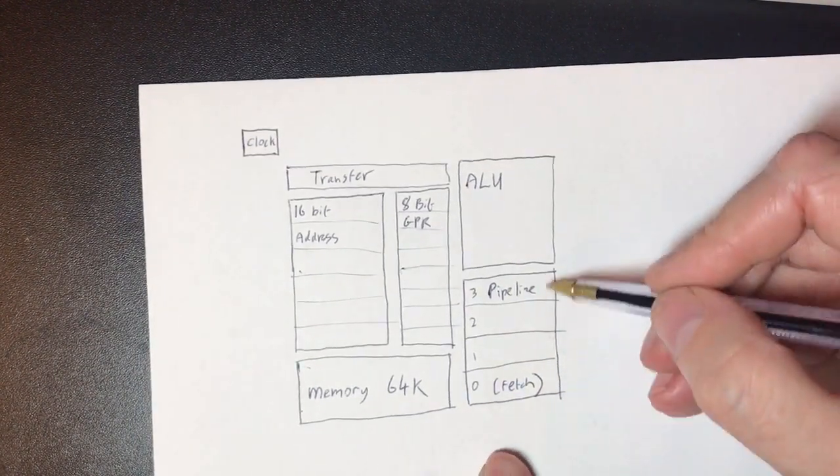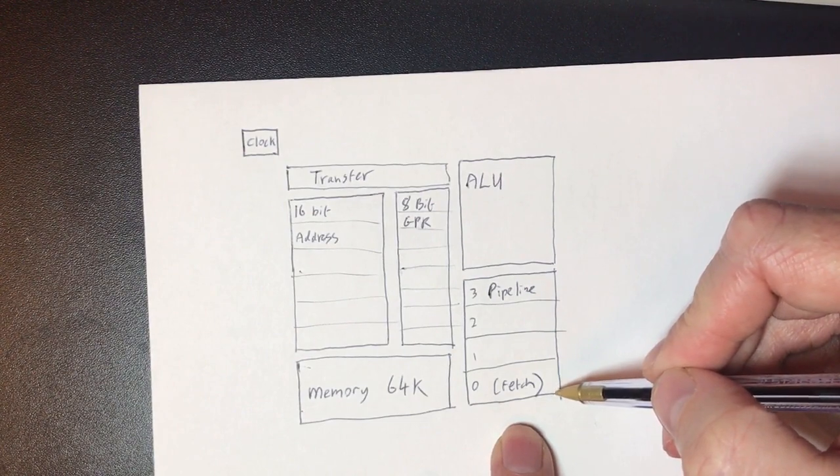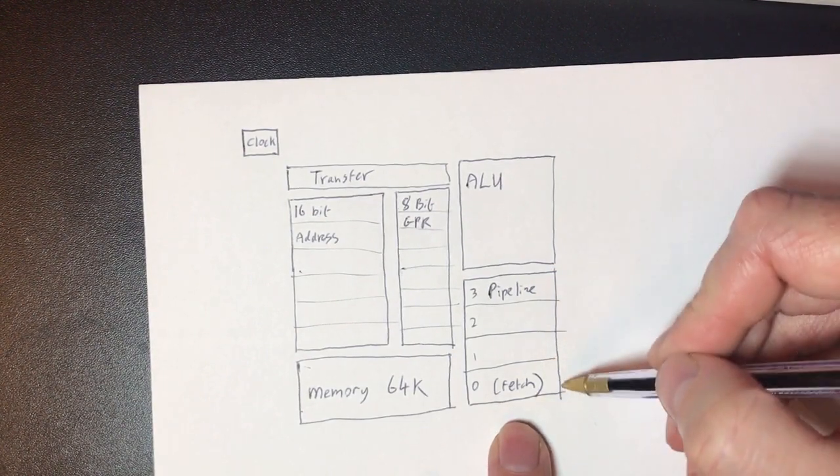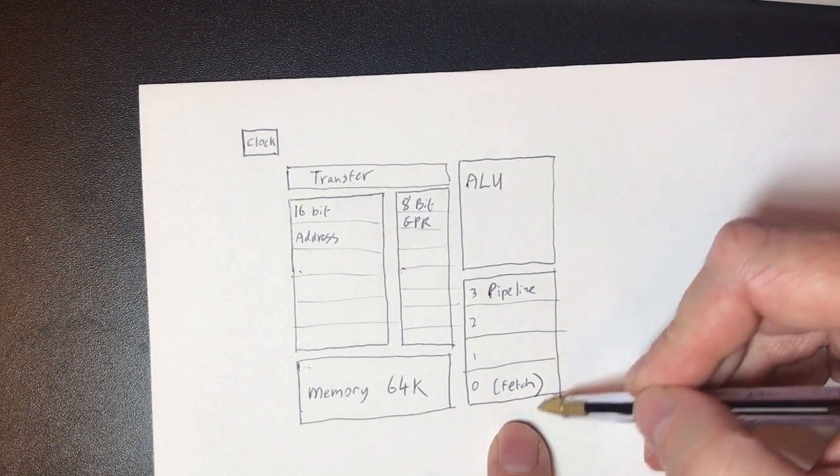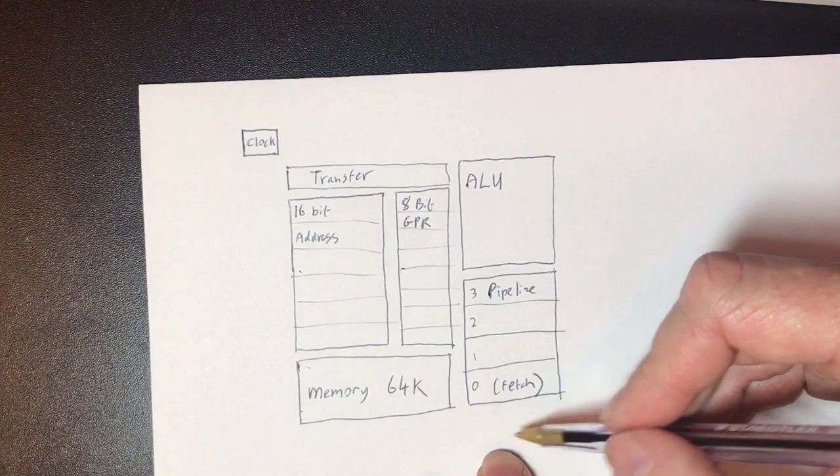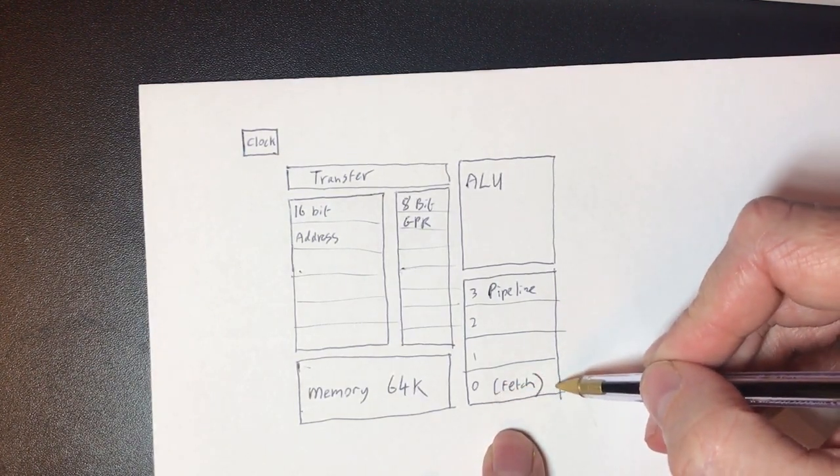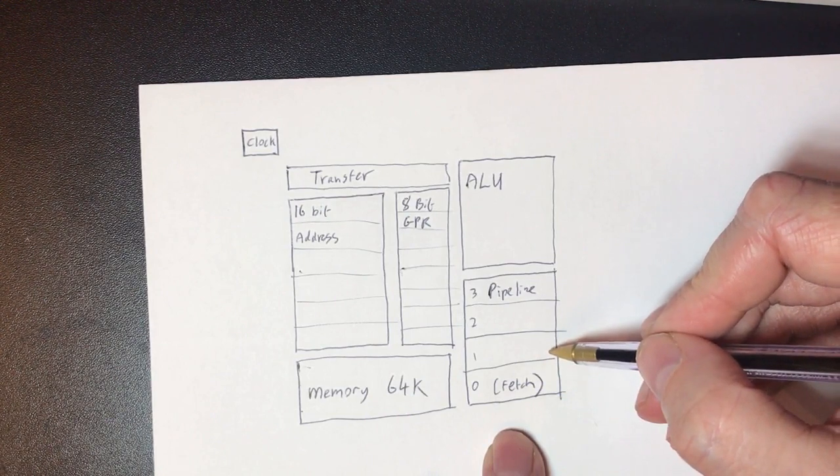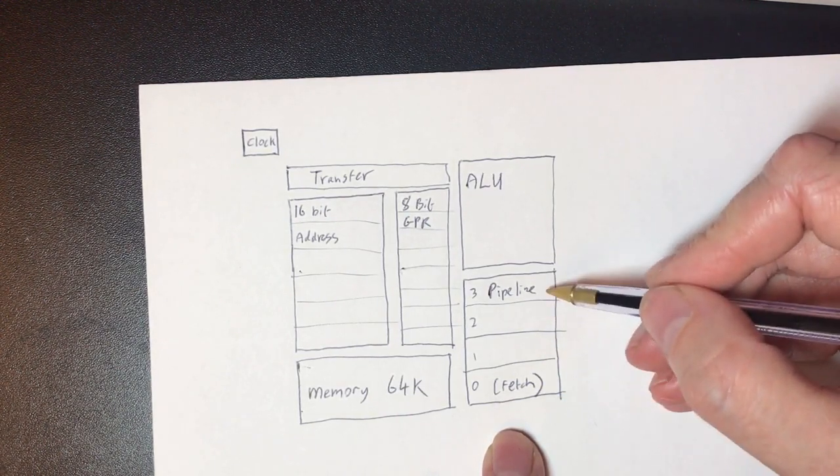Now pipelines are different than that. What you have is a number of steps and the instruction will move down those steps as new instructions are fed in at the front. So whilst the order of operations is very simple, in the first stage you'll fetch the instruction and then you'll move on doing a succession of operations until it's complete.